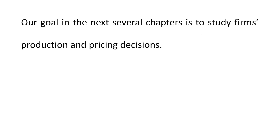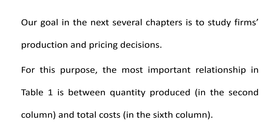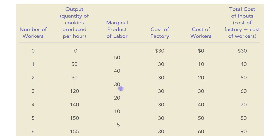Our goal in the next several chapters is to study firms' production and pricing decisions. For this purpose, the most important relationship in the table is between the quantity produced and the total cost.